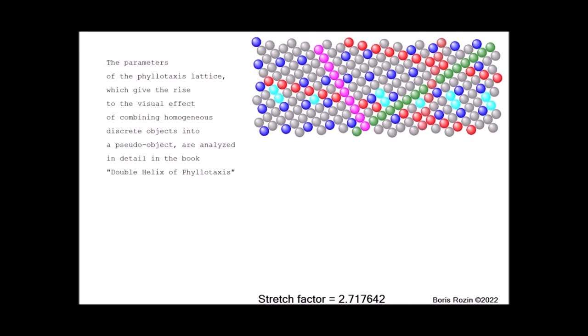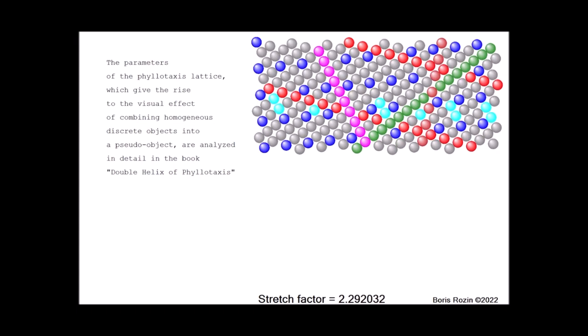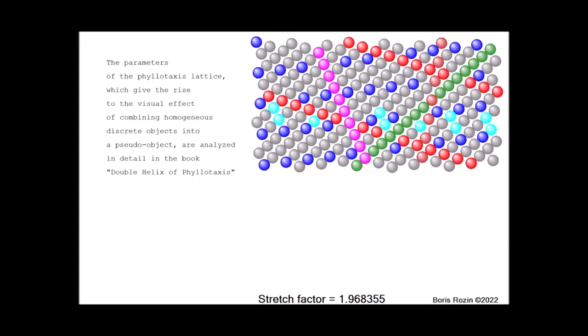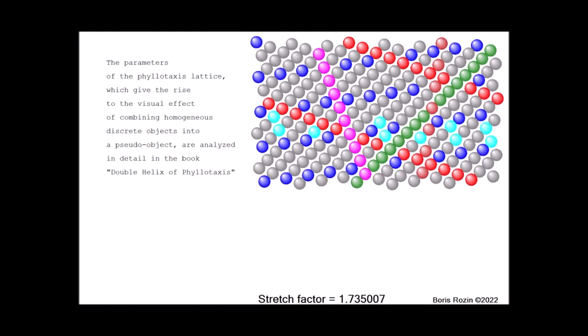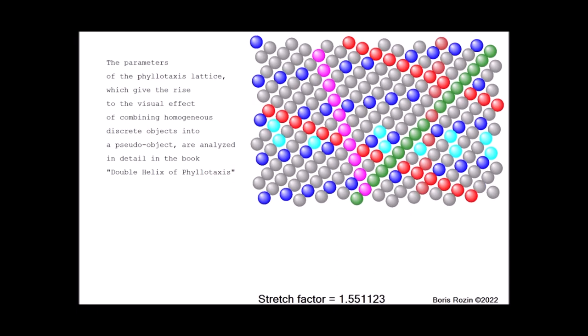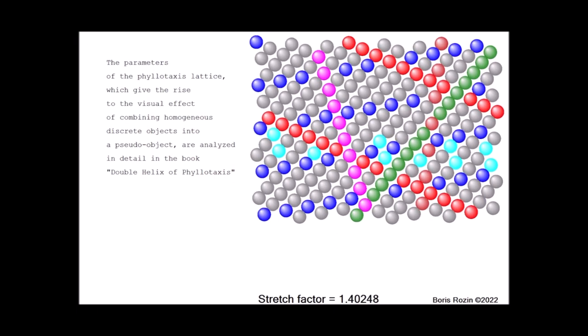The parameters of the phyllotaxis lattice, which give rise to the visual effect of combining homogeneous discrete objects into a pseudo-object, are analyzed in detail in the book Double Helix of Phyllotaxis.